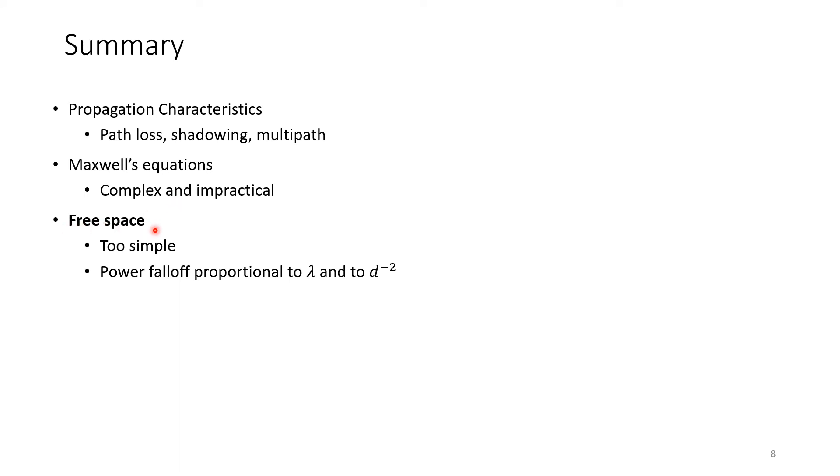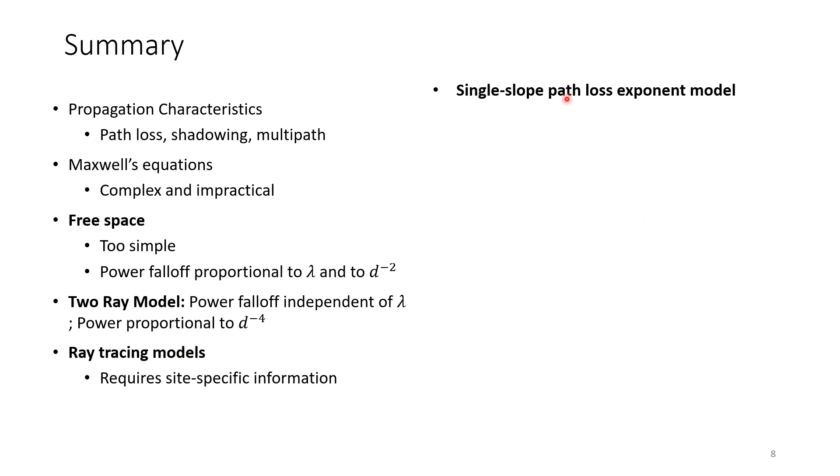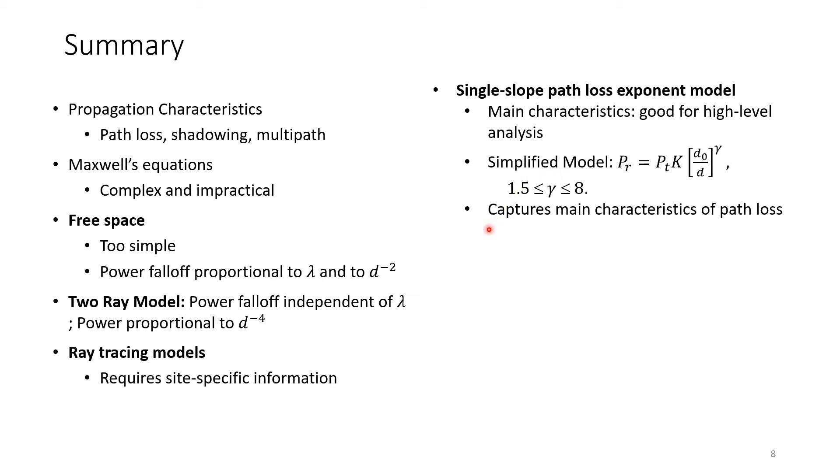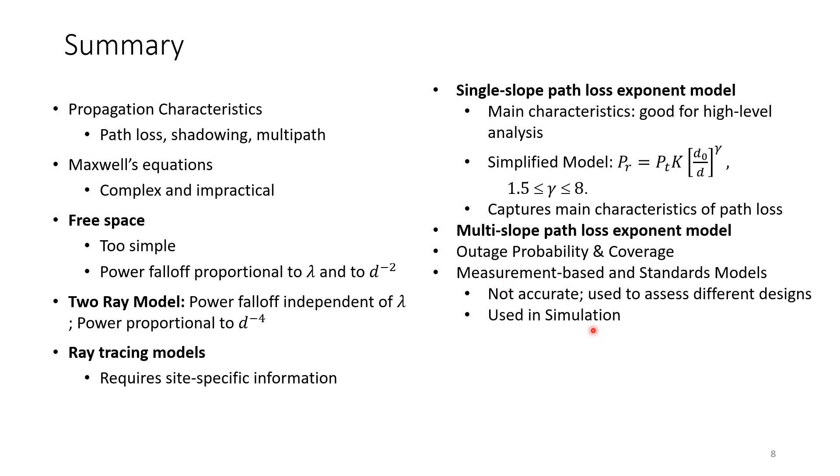This provides a summary of everything we've done. Propagation characteristics include path loss, shadowing, multipath. Maxwell equations are complicated, so we use simpler issues. We started with free space model, then two-ray model, ray tracing, single-slope path loss exponent model, multi-slope model. We calculated outage probability and coverage, looked at measurement-based and standard models, millimeter wave path loss models with attenuation due to rain and oxygen, and large attenuation at very high frequency.